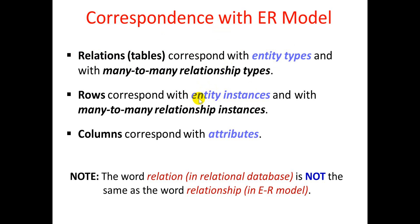In the ER model, the ER diagram has one entity, and the relational model has one corresponding table. The ER model has one entity row, and each attribute in the ER model has one column in the relational model.